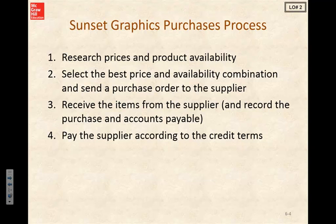Let's continue with our role of business analyst helping Sunset Graphics with this process. Here's what we know about their purchase process: they research prices and product availability, select the best price and availability combination, and send a purchase order to the supplier. They receive the items, record the purchase and accounts payable, then pay the supplier according to the credit terms.